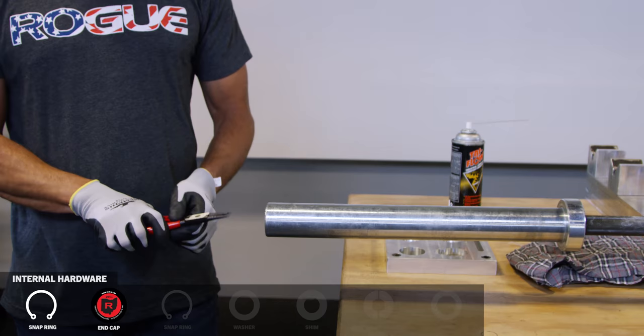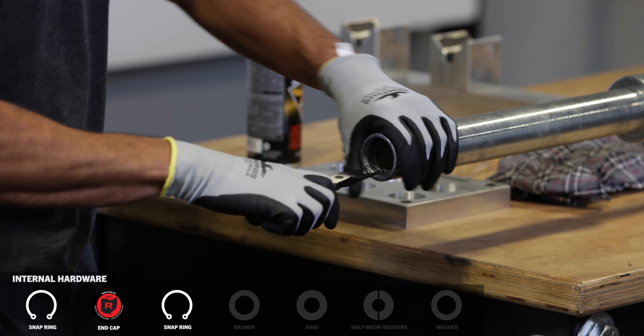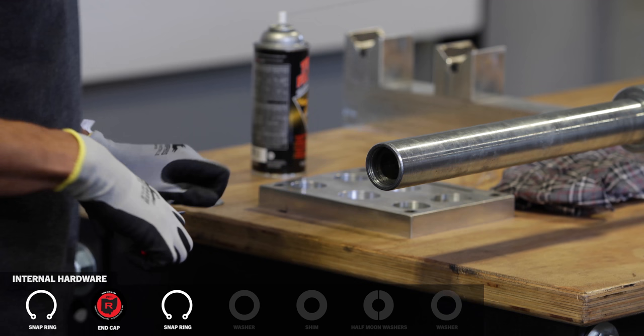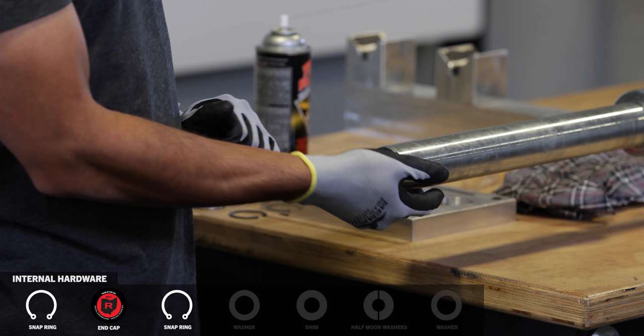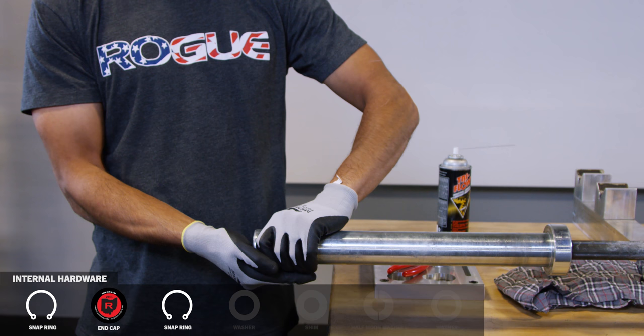Third, you have the inner snap ring. At this point, you're going to hold your hand underneath the end of the sleeve and push the sleeve back.